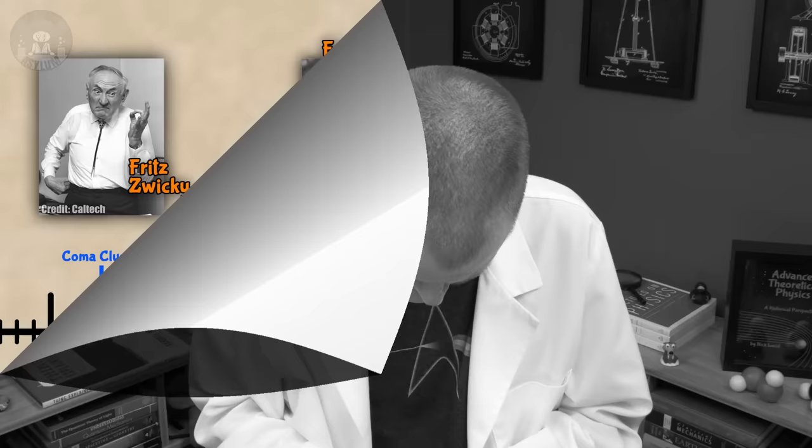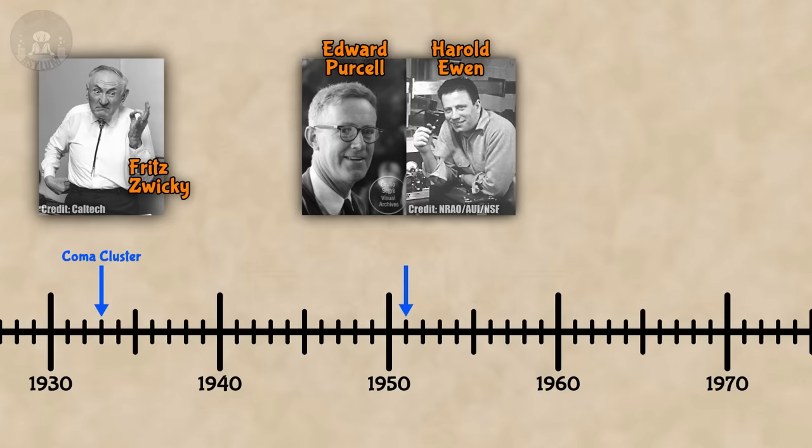Back to the timeline! In 1951, Harold Ewan and Edward Purcell discovered the 21cm hydrogen line. This allowed us to find all the cold hydrogen between stars and between galaxies. Wait, wait, wait, wait. Cold hydrogen? 21cm line? Explain this stuff. Okay, okay, fine.